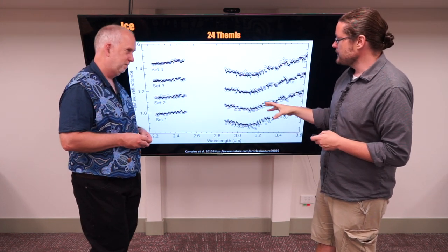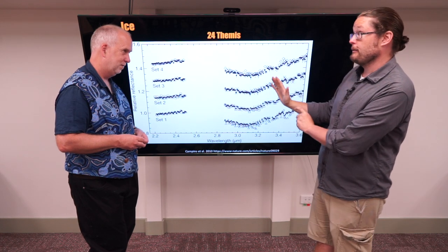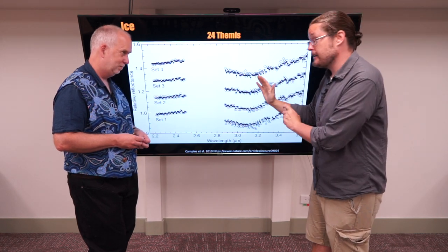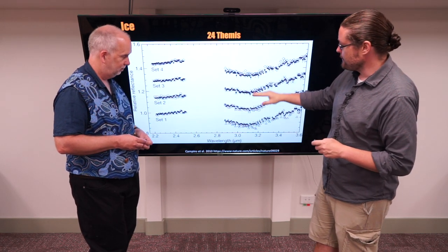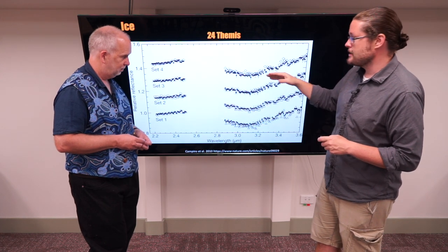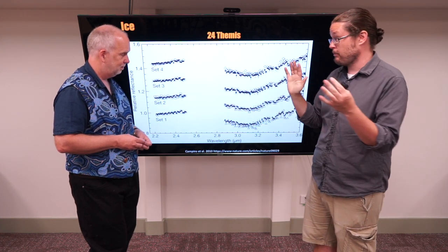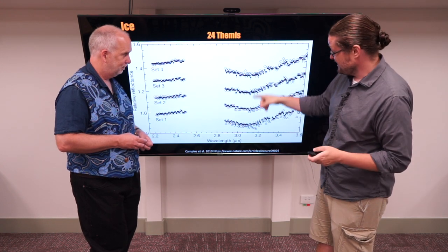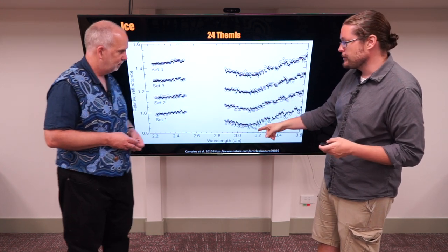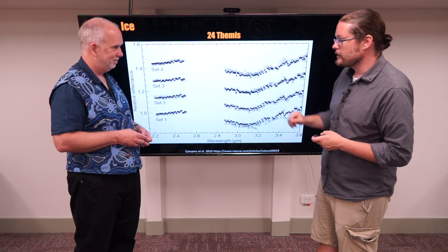So this becomes exciting because maybe we actually do have an asteroid with lots of ice on it. And these different sets are different measurements at different times. So presumably they measured a different part of the asteroid as it spun around. And it's kind of consistently all the way through. It didn't just disappear on one side.